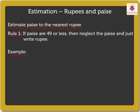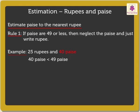Let's consider the amount as 25 rupees and 40 paise. Here, as the paise are less than 49, we neglect the 40 paise and get the estimated amount as 25 rupees.